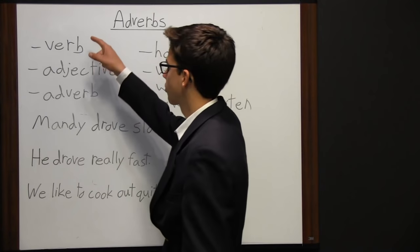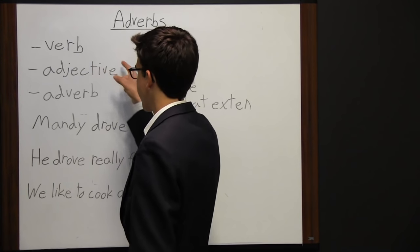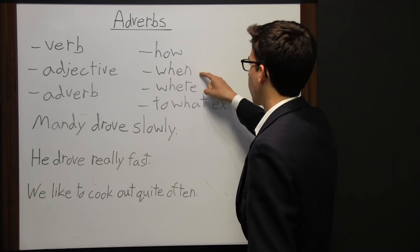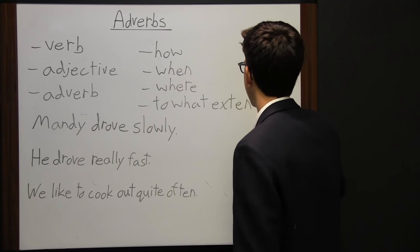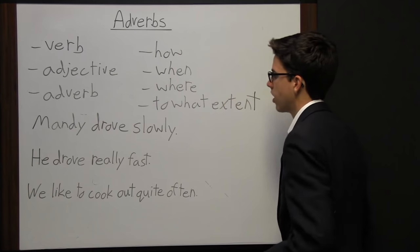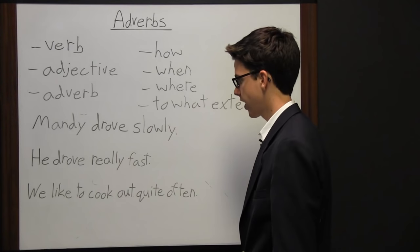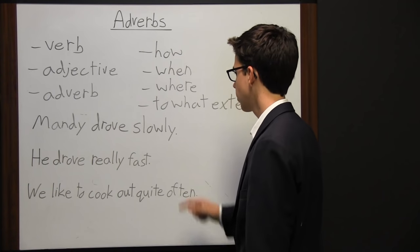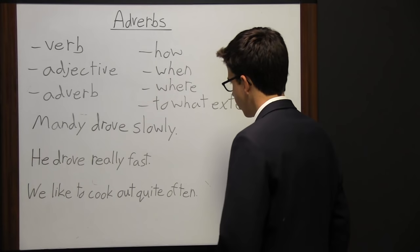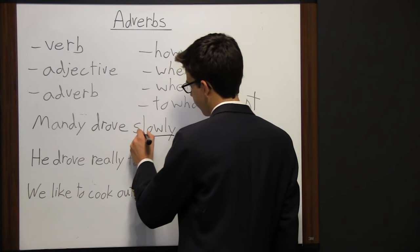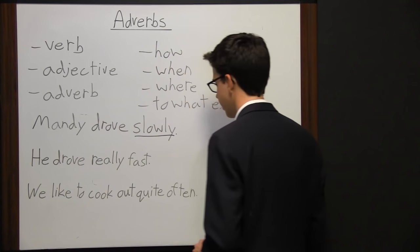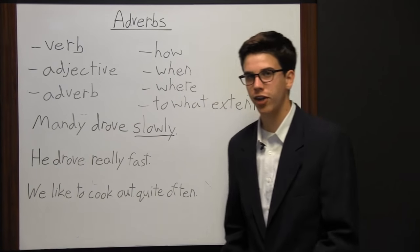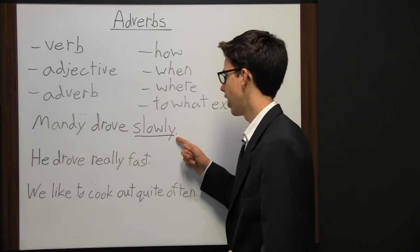So an adverb is going to describe a verb, an adjective, or another adverb, and it's going to tell how, when, where, or to what extent. Let's look at three sentences, each with an adverb. The first one says 'Mandy drove slowly.' The adverb here is 'slowly' — it ends in '-ly.' A good way to find an adverb is by looking for a word with the suffix '-ly.'